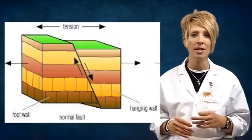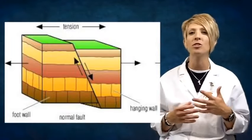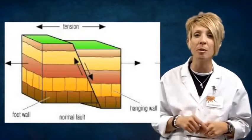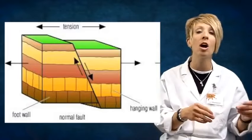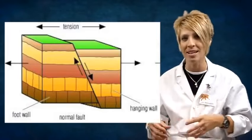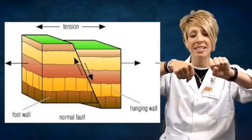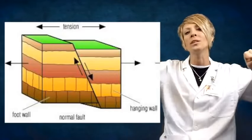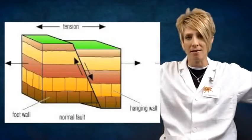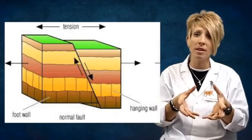The first fault I want to talk about is called a normal fault. This is created by a force called tension. Make sure you remember that normal faults are caused by tension. Tension is what happens when you take, let's say, a rope and pull really hard on both sides of it. The stress that rope is under is caused by tension.